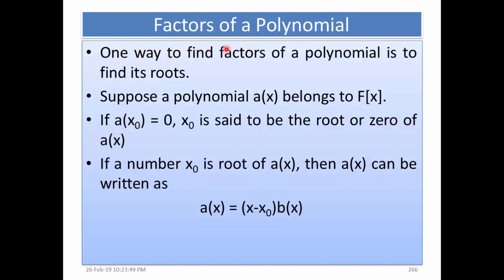Factors of a polynomial: one way to find factors of a polynomial is to find its roots. Suppose a polynomial a(x) belongs to f(x). If a(x_0) equals 0, then x_0 is said to be the root or zero of a(x). If x_0 is a root, then a(x) can be written as a(x) equals (x minus x_0) multiplied by b(x).